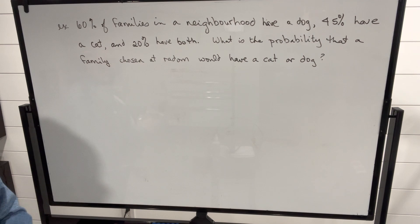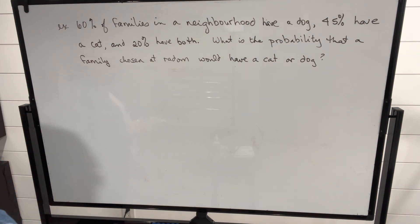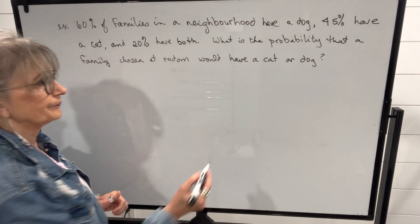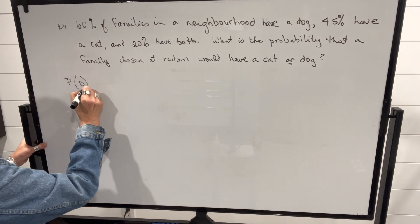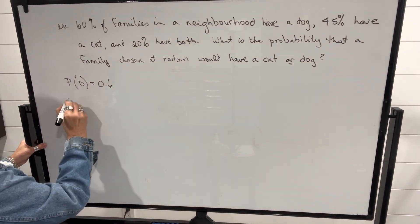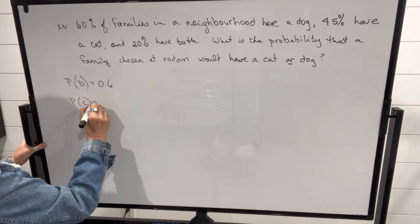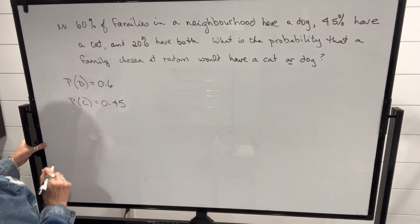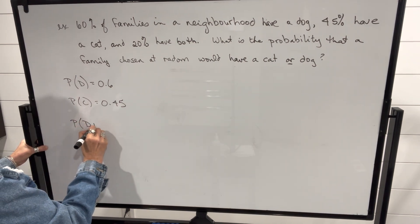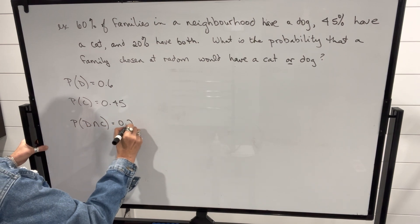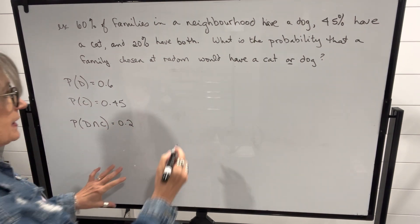Another example from the previous video: 60% of families in a neighborhood have a dog, 45% have a cat, and 20% have both. What's the probability that a family chosen at random would have a cat or a dog? Let's write these probabilities. The probability of having a dog is 0.6, the probability of having a cat is 0.45, and the probability of both — a dog and a cat — is 0.2.